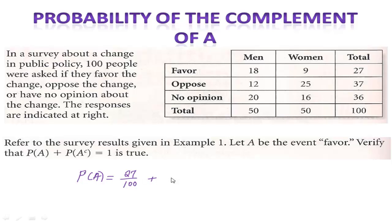If I add the complement of the event favor, let me write over here the probability of the complement of event A, that would be everything that is not favor. So if favor is 27, that's event A. The complement of that event would be everything that's not favor.